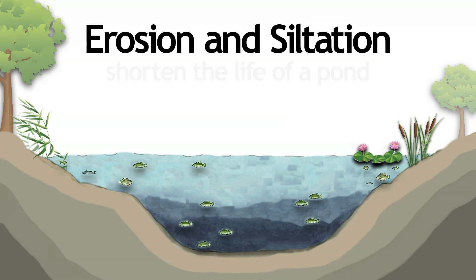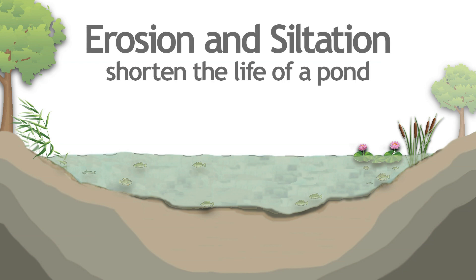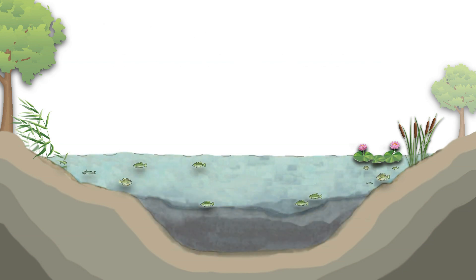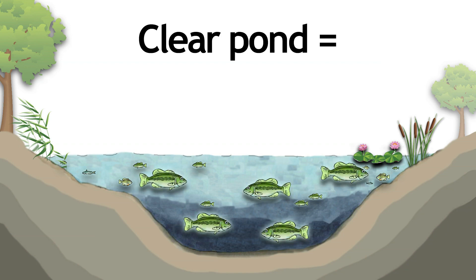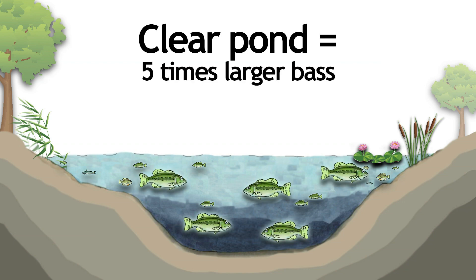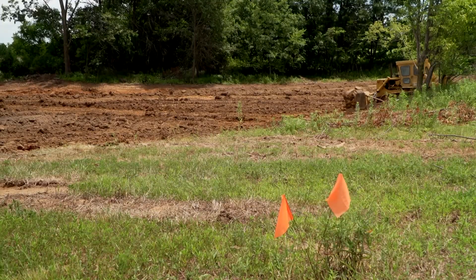Erosion and siltation shorten the life of a pond and result in muddy waters of poor quality for fish and other wildlife. For example, bass 28 months old in five experimental clear ponds weighed almost five times as much as bass of the same age in five muddy ponds. To keep the pond from filling with silt,